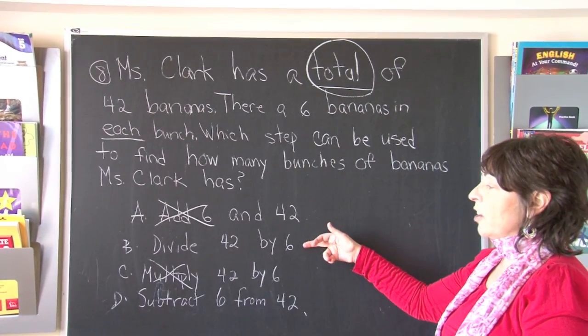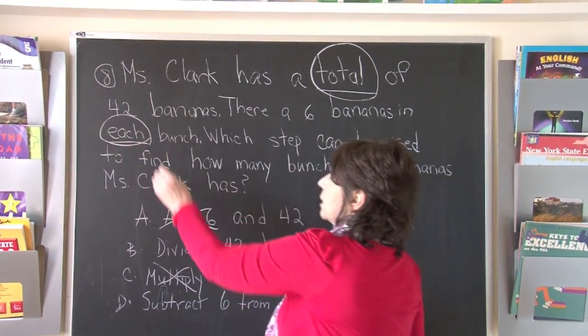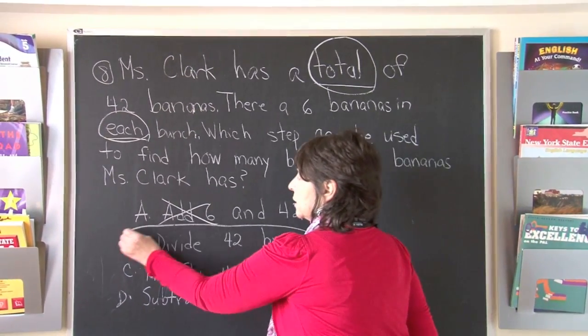So we can either divide or subtract. The other key word was each. It told us it was the same amount in each bunch. Therefore, the correct answer is divide.